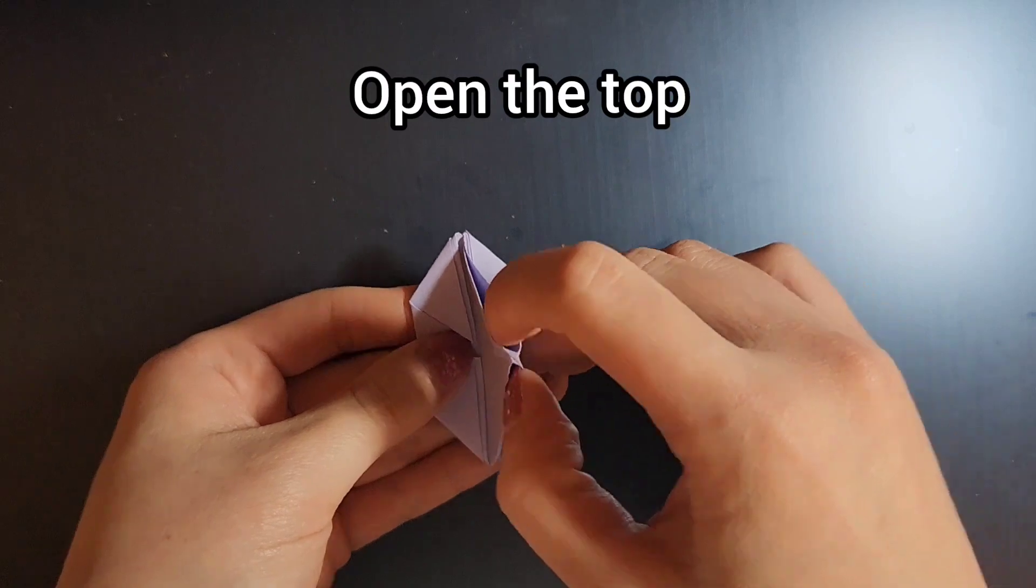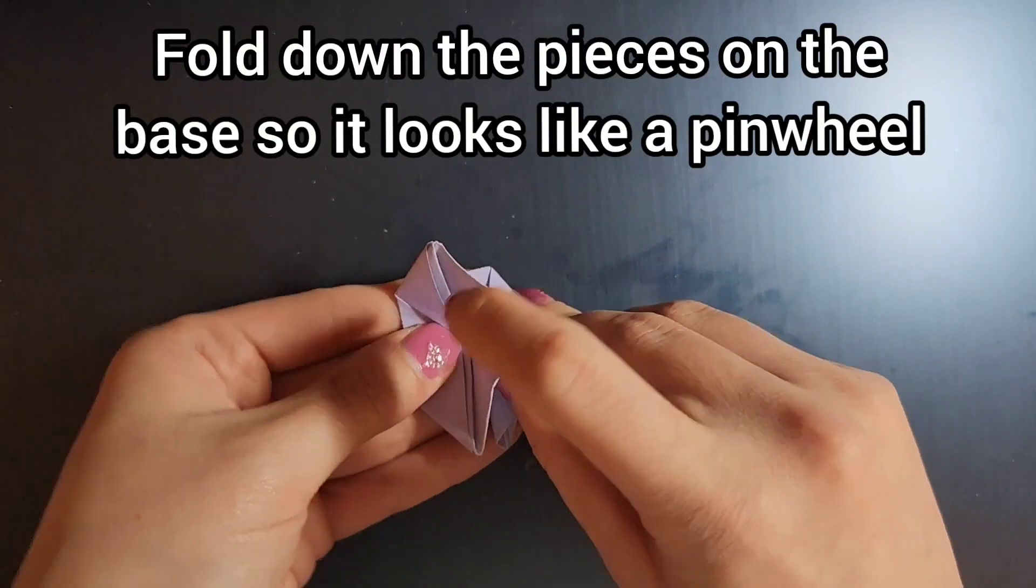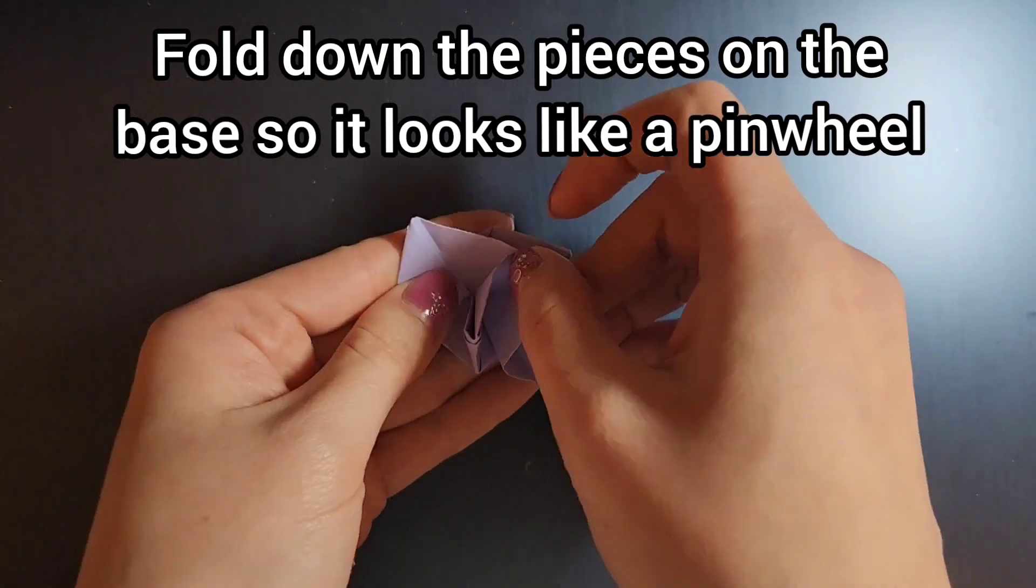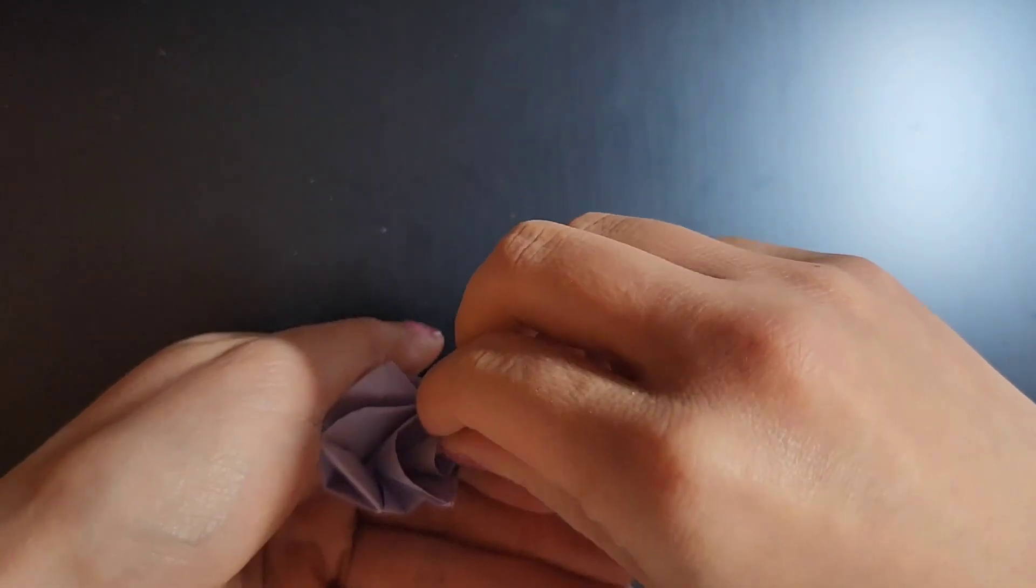Next, open up the top using two fingers. You're going to want to fold down each piece on the side so that it resembles the pinwheel. And next what you will do is pinch it and twist the center. This will give you that rose look.